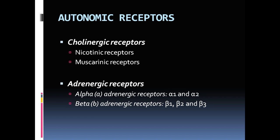Autonomic receptors are divided on the basis of which neurotransmitter activates them: cholinergic receptors, activated by acetylcholine, and adrenergic receptors, activated by norepinephrine or epinephrine. These are the two main divisions of autonomic receptors.